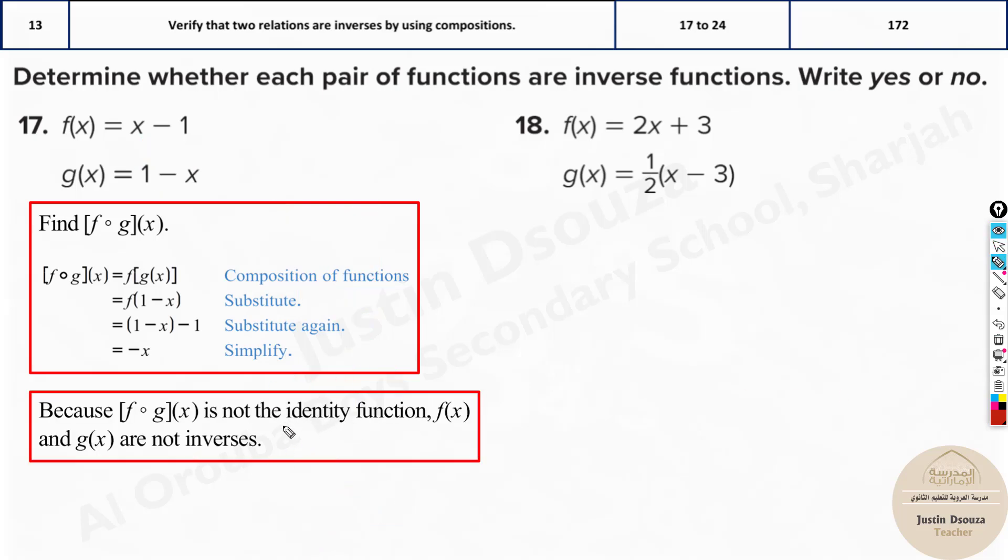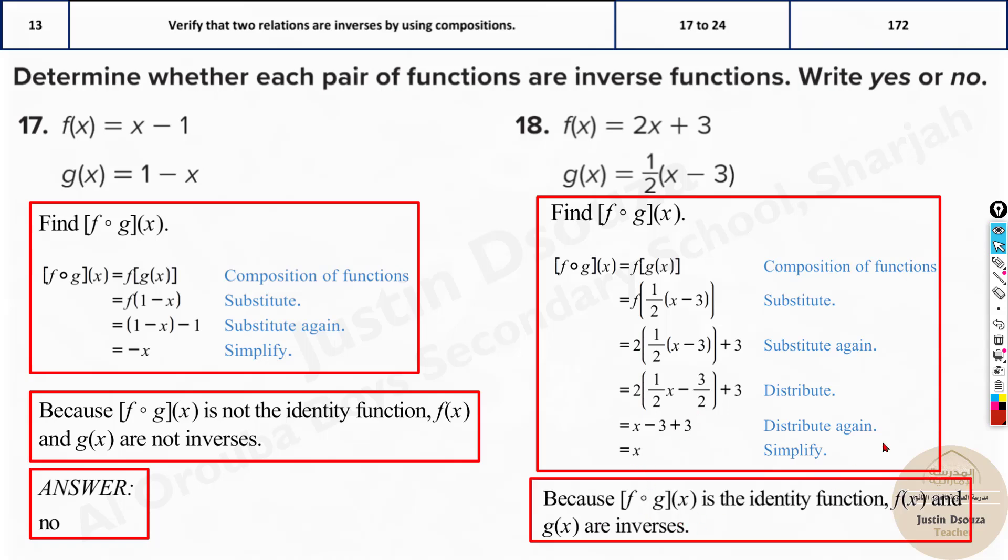Now let's try f(g(x)). We will write f of, g of x is half of x minus 3. Let's try solving this. Wherever x is, put this. It will be 2 times half into x minus 3 plus 3. When you multiply this, this goes off. You will have x minus 3 plus 3. This cancels off, x. Yes, they are inverses of each other. They'll be inverse. Yes, that's the answer.